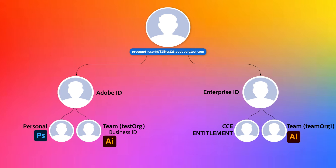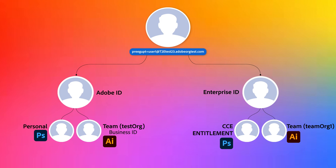Third step: a company purchases an Enterprise product, an Enterprise org is created, the admin claims the domain, and then adds the same user to the newly created Enterprise org. At this point, the console identifies the user is being added into a claimed domain owned by the org, so it creates an Enterprise ID with the same email address. Note: once a domain has been claimed, there is no longer a choice to invite the Adobe ID to an org — it will always create an Enterprise ID when there is a claimed domain. The user is then assigned Photoshop tied to that Enterprise ID, so now there's an Enterprise ID login account with a Photoshop entitlement profile linked to that login ID.